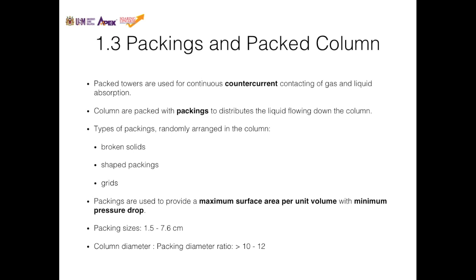Now let's look at packed columns in contrast to plate columns. Packed towers are used for continuous counter-current contacting of gas and liquid in absorption. The column is a simple vessel with packings instead of trays. The packing's job is to distribute liquid flowing from the top. There are three types of packings arranged randomly: broken solid, shaped packing, and grid. Packings increase the contact surface area between gas and liquid per unit volume while minimizing pressure drop.